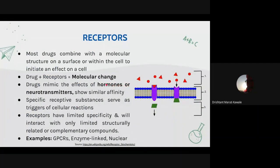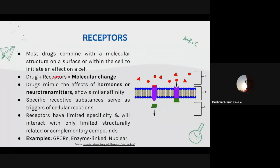If a drug has to show its therapeutic action, it has to bind somewhere — that binding site is the receptor. Receptors can be extracellular, such as GPCRs (G protein-coupled receptors) or one-pass enzyme-linked receptors, and intracellular receptors such as nuclear receptors. Most drugs combine with a molecular structure on the surface or within the cell to initiate an effect. Drugs plus receptor bring about a molecular change.